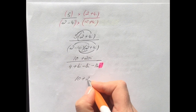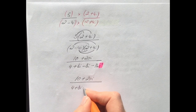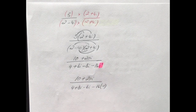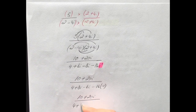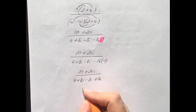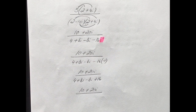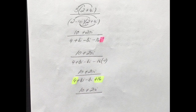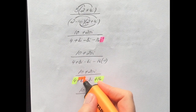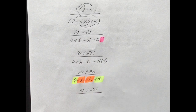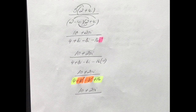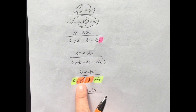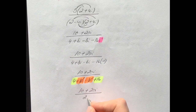Remember from multiplication with complex numbers: whenever you see i squared, substitute minus 1. The top stays the same, but on the bottom, minus 16 times minus 1 gives plus 16. Adding the real parts on the bottom: 4 plus 16 is 20. The imaginary parts plus 8i minus 8i cancel to 0 — this is why multiplying by the conjugate leaves only real parts.